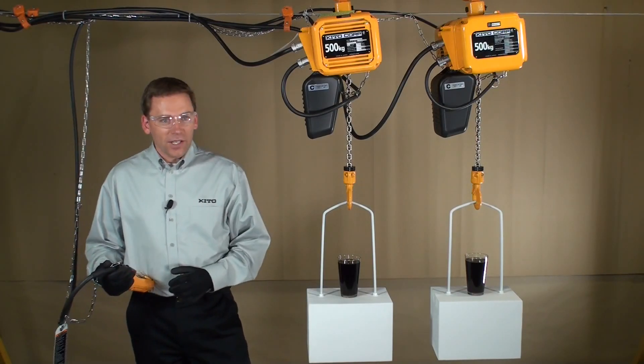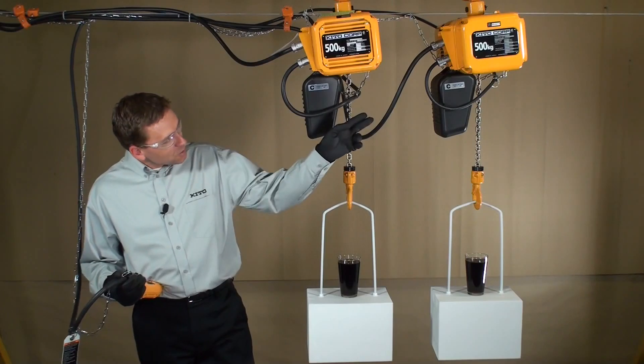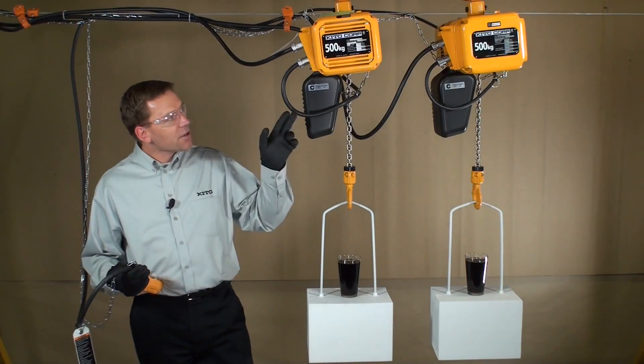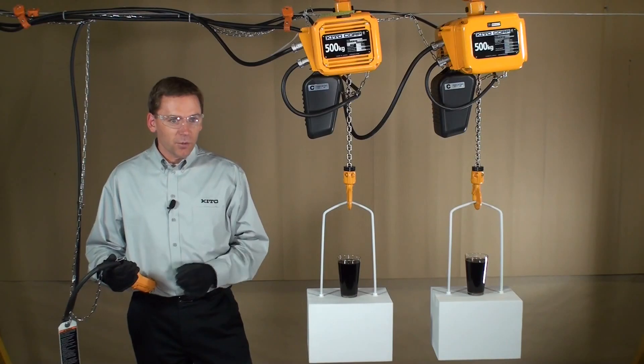We've got two electric chain hoists here. One is a single speed hoist equipped with contactors. The other is a dual speed hoist equipped with a Kito VFD.